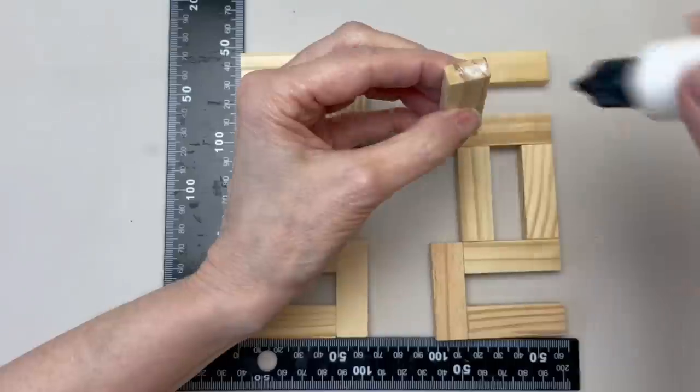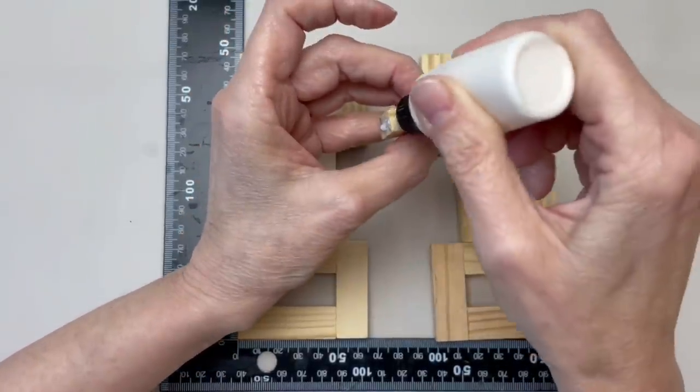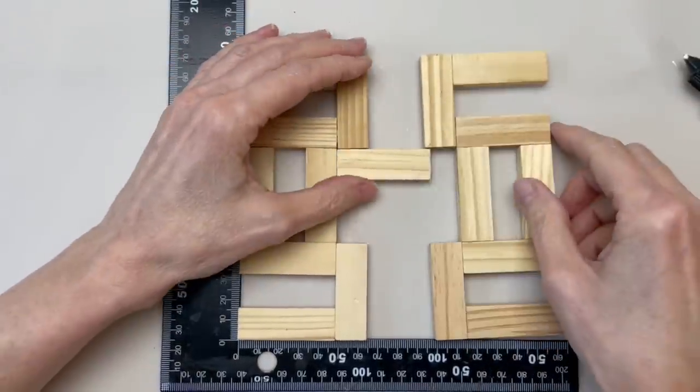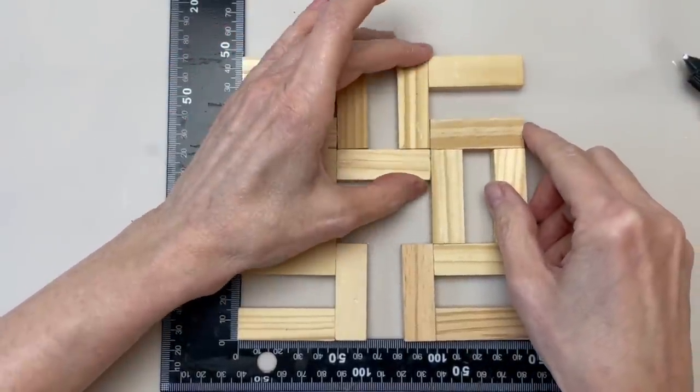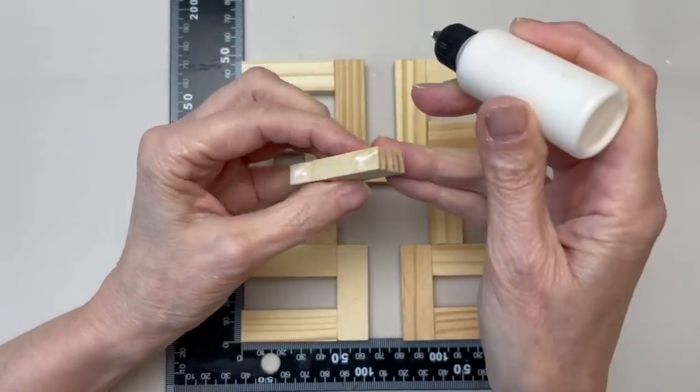Make another one just like it when it's dry, flip it over so they're mirror images. You're going to take two blocks and put them in the middle to connect things. Just like that. No way to explain it, you just gotta watch. And that is one side. You're going to make three more of those.